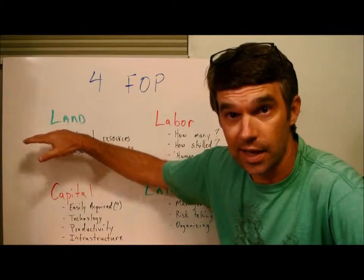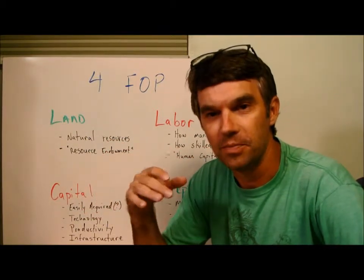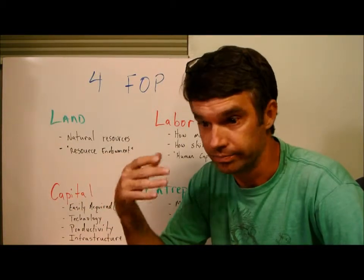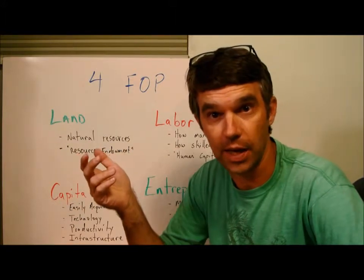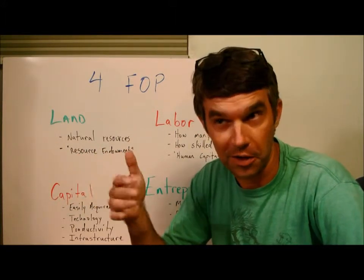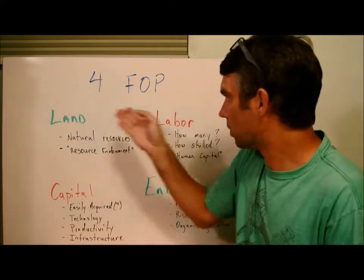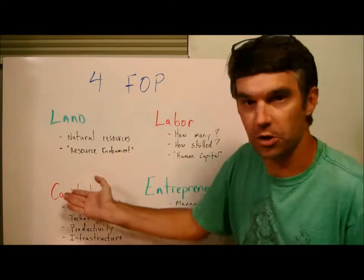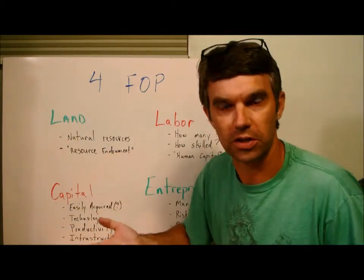Land is just what it sounds like, and a little bit more. It's the natural resources that are there. And because it's economics and we like to keep things confusing, it also includes oceans and water, even though that's not technically land. But the point is, when you look at these four choices, you can't call the oceans labor, entrepreneurship, or capital — therefore it just sort of defaults into that.